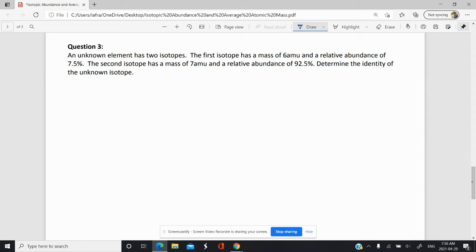The first isotope has a mass of 6 AMU and a relative abundance of 7.5%. The second isotope has a mass of 7 AMU and a relative abundance of 92.5%. Determine the identity of the unknown isotope.